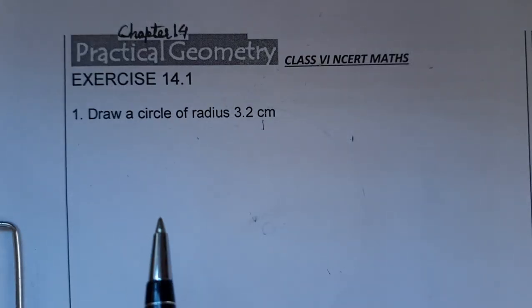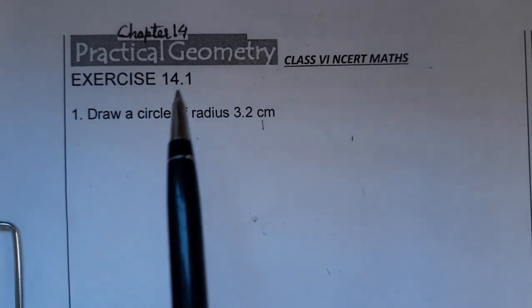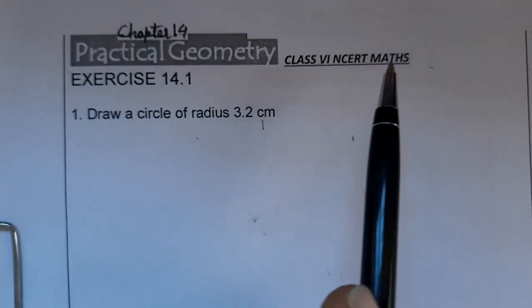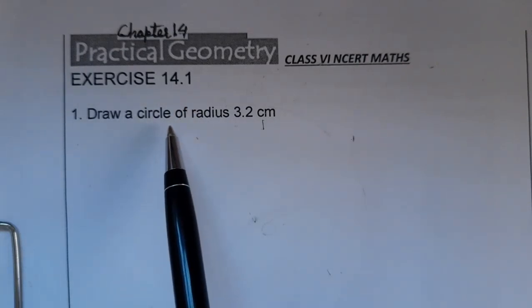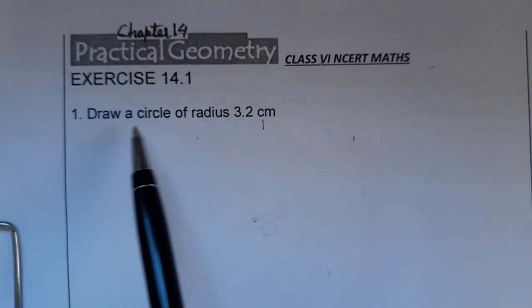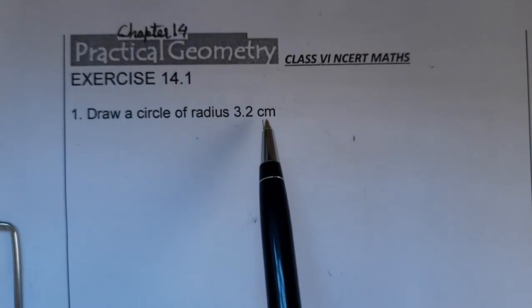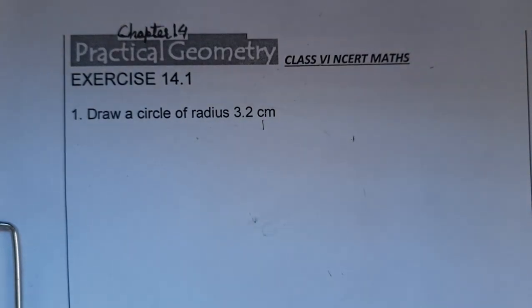Hello students, today we are going to do Chapter number 14, Practical Geometry, Class 6 NCERT Maths, Exercise 14.1, questions number 1 and 2. Question number 1: Draw a circle of radius 3.2 centimeter.